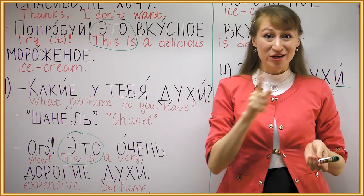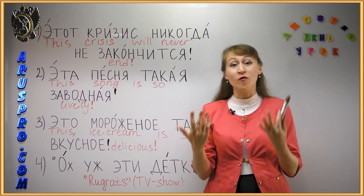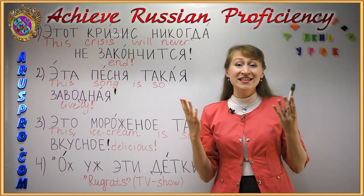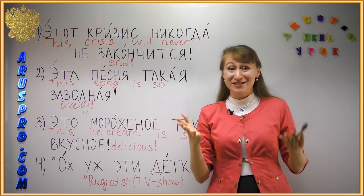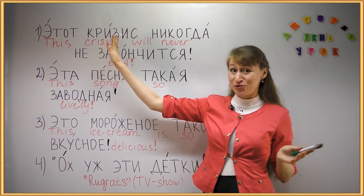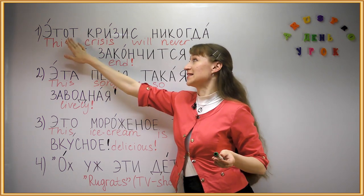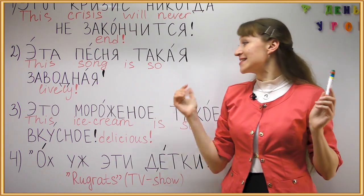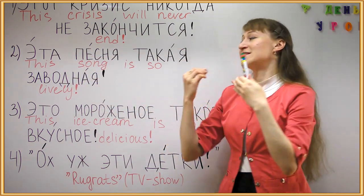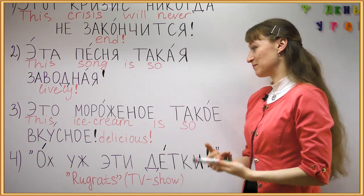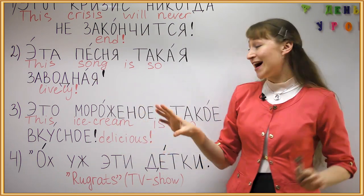Now Part 3: handy phrases. We use demonstrative pronouns in exclamation sentences to express feelings. For example: этот кризис никогда не закончится! — 'this crisis is never going to end!' Кризис is masculine so этот agrees with it. Another example: эта песня такая живая! — 'this song is so lively!' We emphasize this song to express emotions about it. Это мороженое такое вкусное! — 'this ice cream is so delicious!' Again emphasizing the noun.